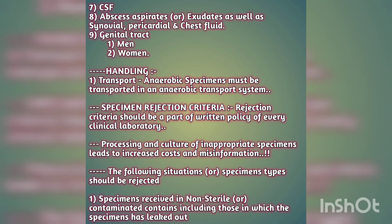Synovial joint fluid, pericardial fluid, chest fluid, and genital tract specimens — including high vaginal swab, urethral swab, and pap smear — are the remaining collection sites. For handling specimens, transport is also necessary. Anaerobic specimens must be transported in an anaerobic transport system. Most specimens can be held at 2°C to 8°C during transport.